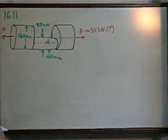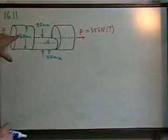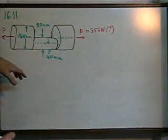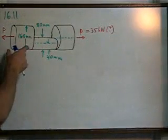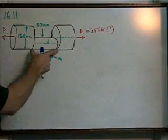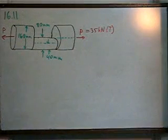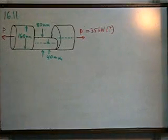For the next problem, 1611, with changes in the dimensions, what we have is a machine part where the two ends are 160 millimeters in diameter, but the center section is not along the same axis and is only 80 millimeters in diameter.